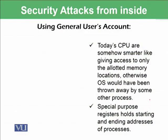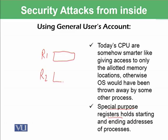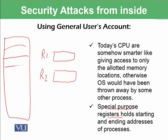Today's CPUs are somewhat smarter — they give access to allotted memory locations only; otherwise, the operating system would be thrown outside the main memory. There are some special purpose registers, such as R1 and R2, working with the RAM. In R1, the starting address is saved for a particular process — for example, the operating system itself — and R2 holds the upper address limit, for example 500. The CPU checks these special purpose registers to determine whether a process is asking for access outside these limits or not.